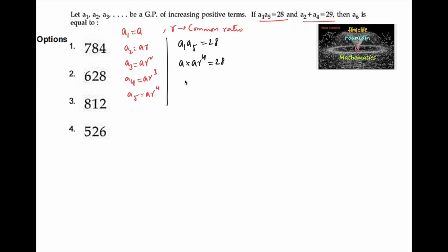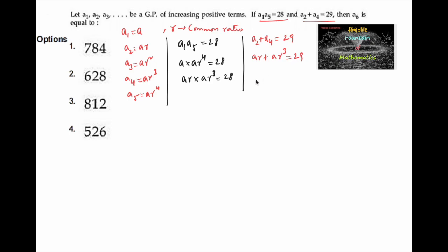So this can also be written as ar·ar³ is equal to 28. Similarly, a2 plus a4 is equal to 29, that is ar plus ar³ is equal to 29.